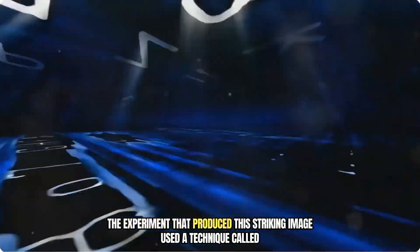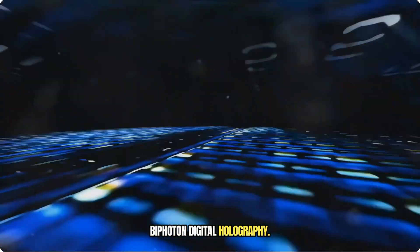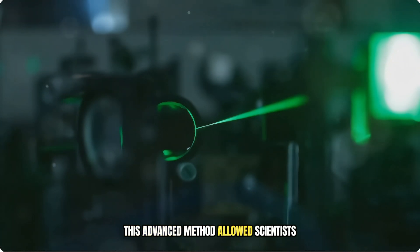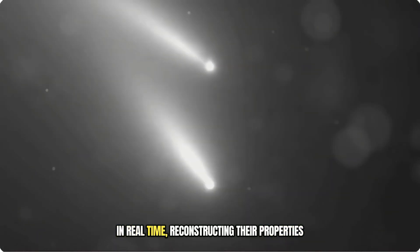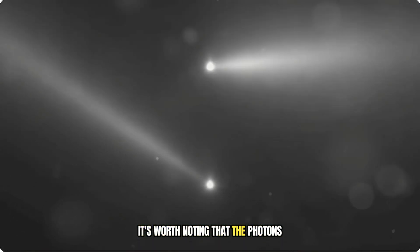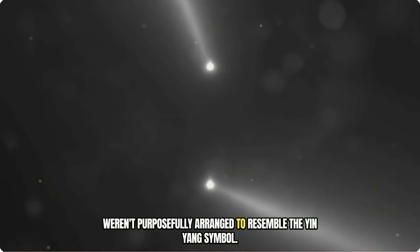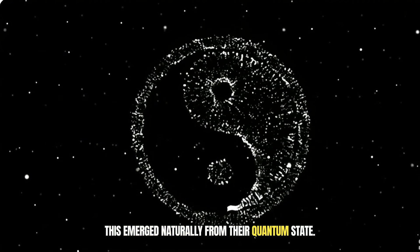The experiment that produced this striking image used a technique called biphoton digital holography. This advanced method allowed scientists to visualize two entangled light particles in real time, reconstructing their properties from a 2D interference pattern. It's worth noting that the photons weren't purposefully arranged to resemble the yin-yang symbol. This emerged naturally from their quantum state.